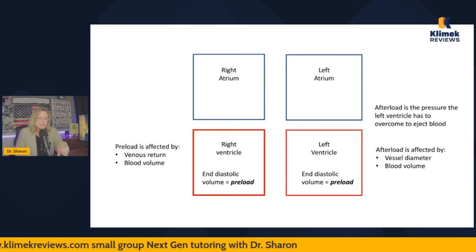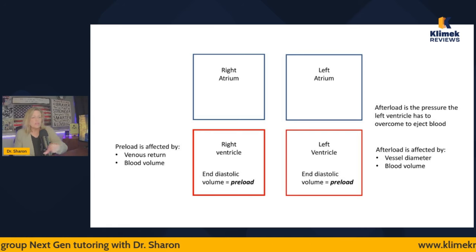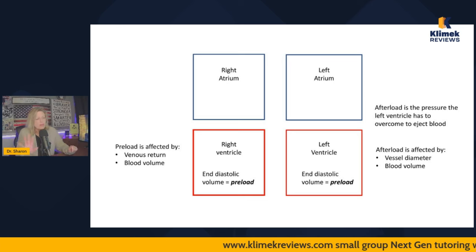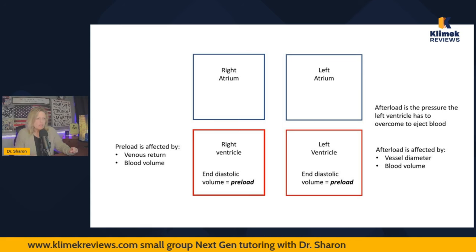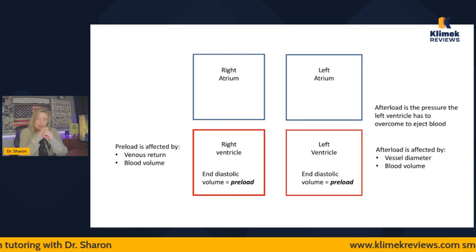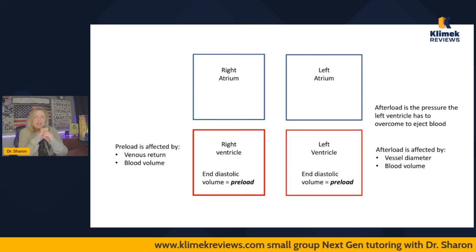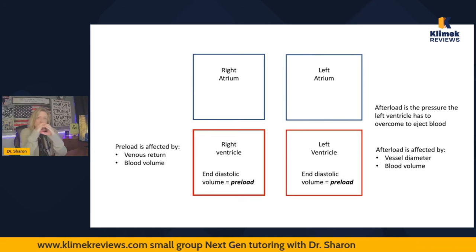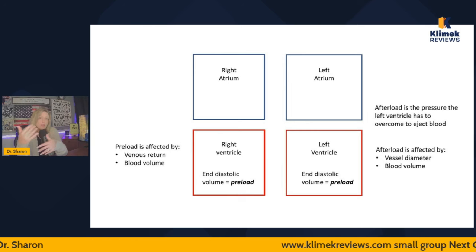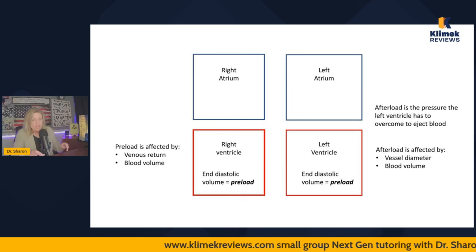Afterload is the pressure the left ventricle has to overcome to eject blood — we primarily look at peripheral pressures. It's affected by the diameter of the vessel: if the diameter gets smaller and it constricts, afterload goes up. If the vessel stays the same diameter but you put more volume in it, the pressure also goes up. So blood volume affects both preload and afterload.